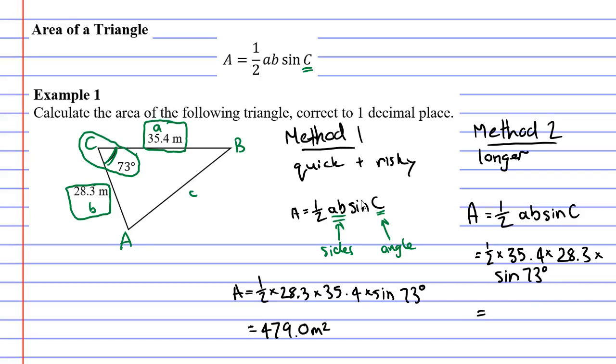We plug this into our calculator and we're going to get the exact same solution as we did with the quick and risky method. 479.0 metres squared.